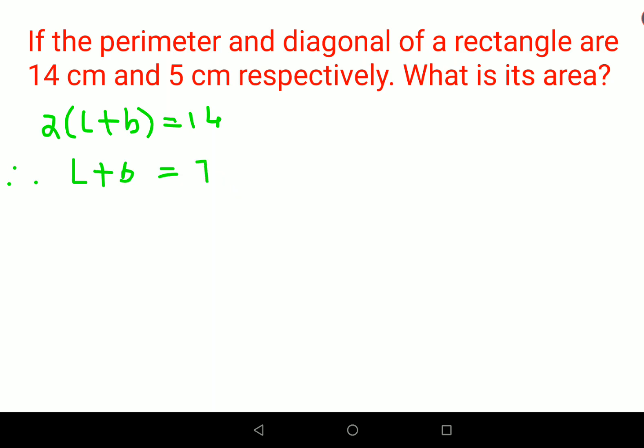Next, we know the diagonal, and we know that diagonal is the hypotenuse when you look at the rectangle. The diagonal becomes the hypotenuse because the angle between length and breadth is always 90 degrees. So we can say length squared plus breadth squared is hypotenuse squared, which is 25.